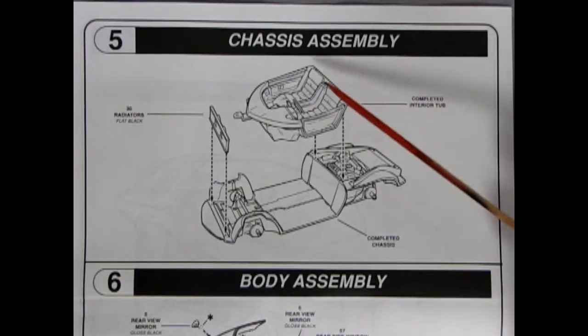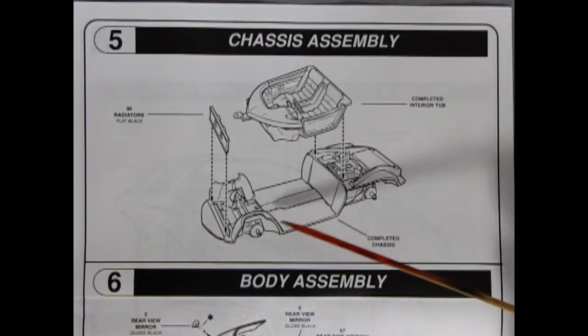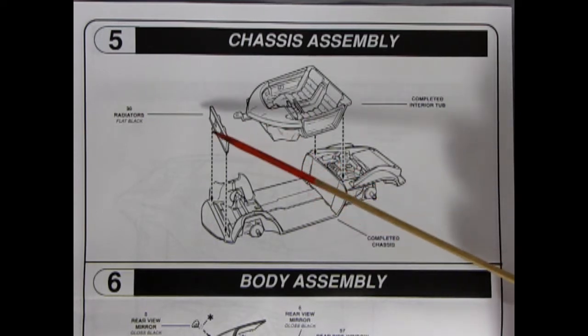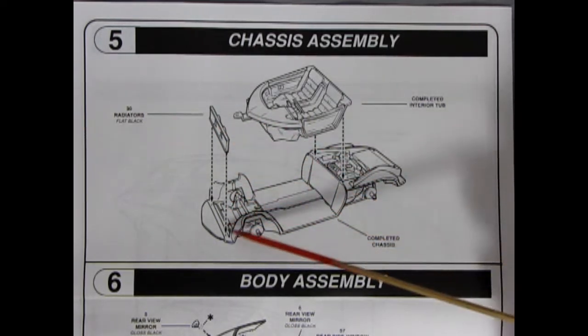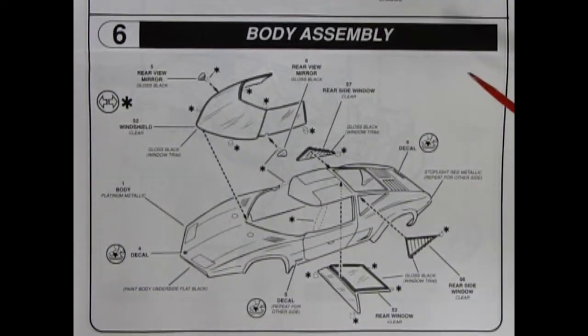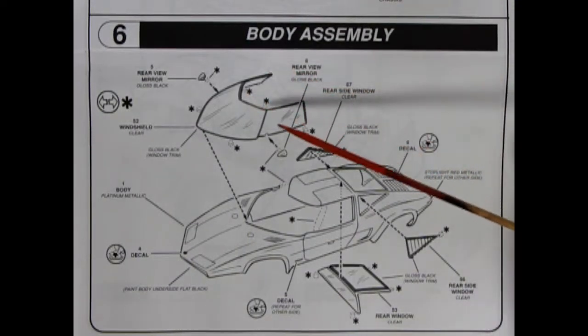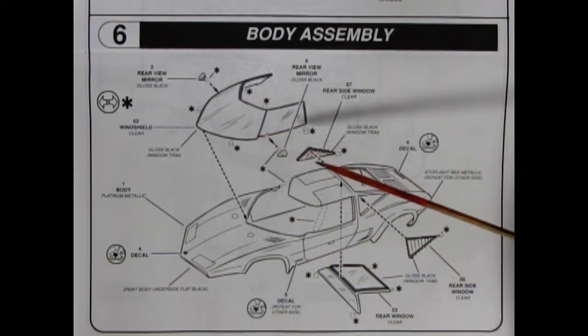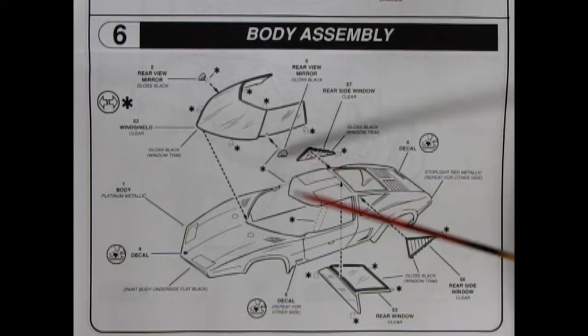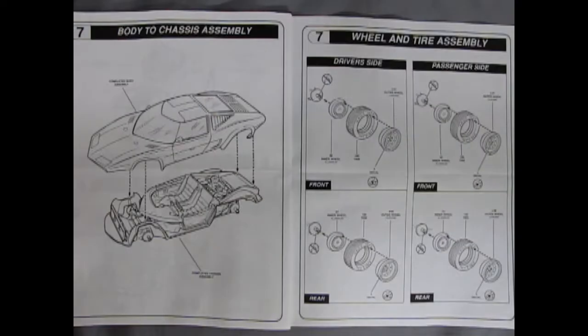Panel 5 shows our completed interior going onto our completed chassis and then we get our radiators which are up front here for air cooling dropping into place. Now we get into the body assembly with panel 6 and here we see our glass being glued into place. Front windshield, side windows, and the rear as well as our sport mirrors gluing onto the side.